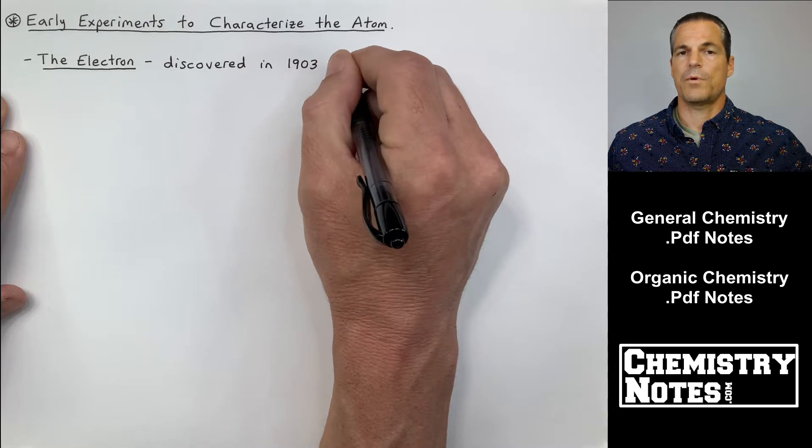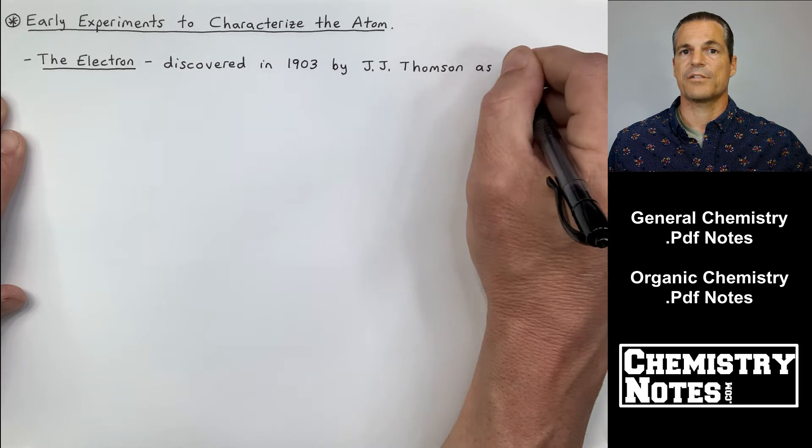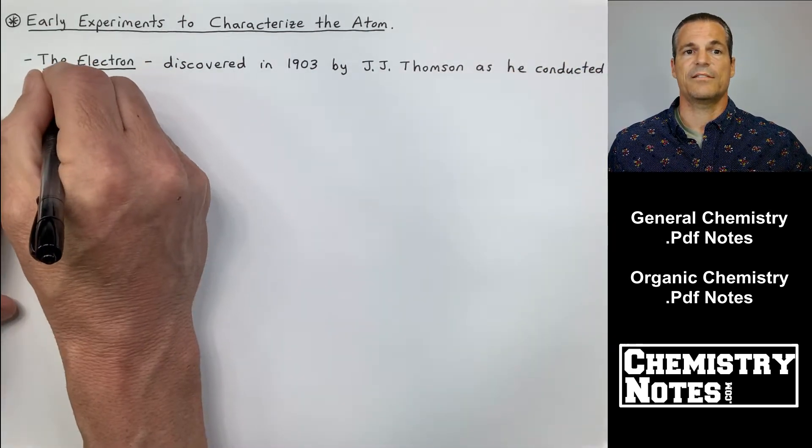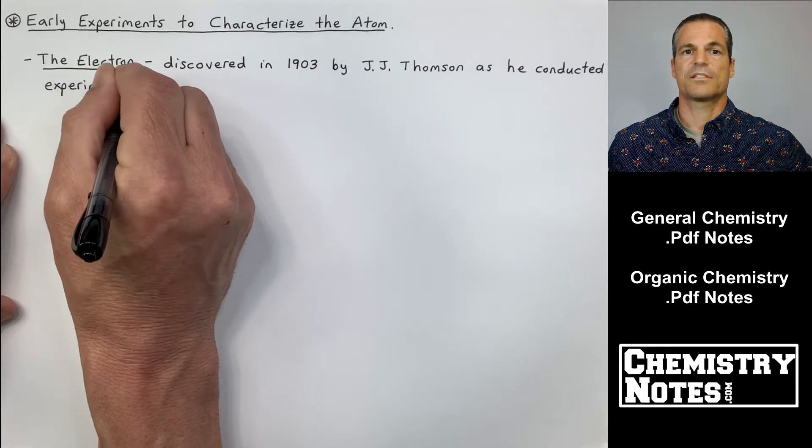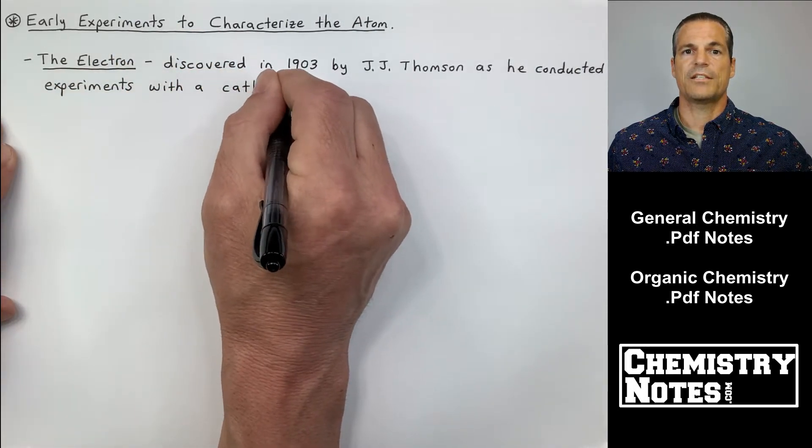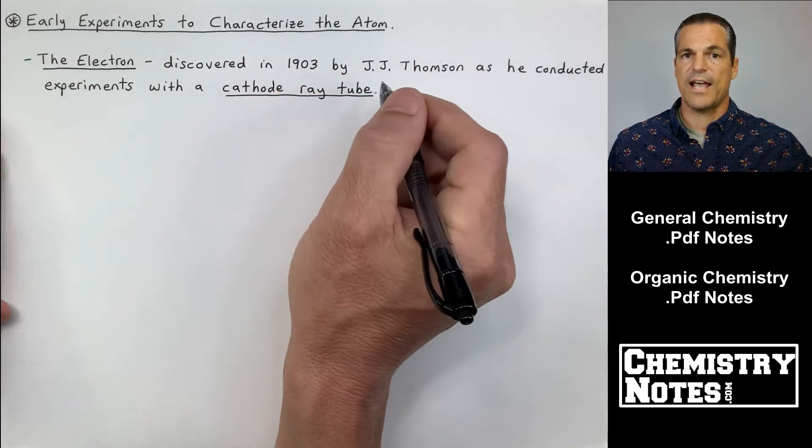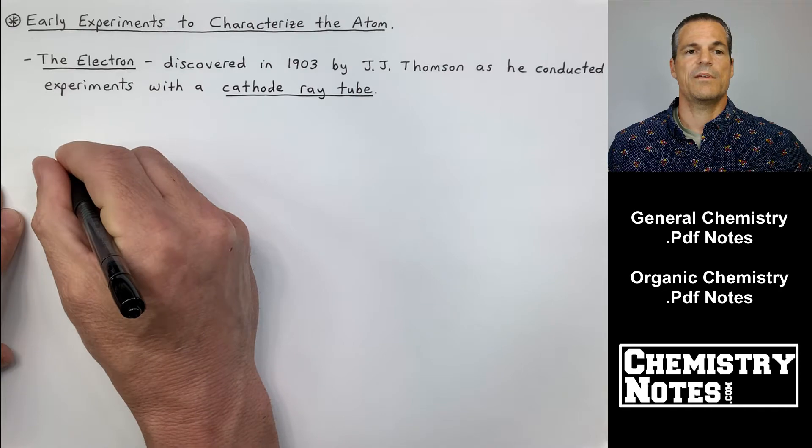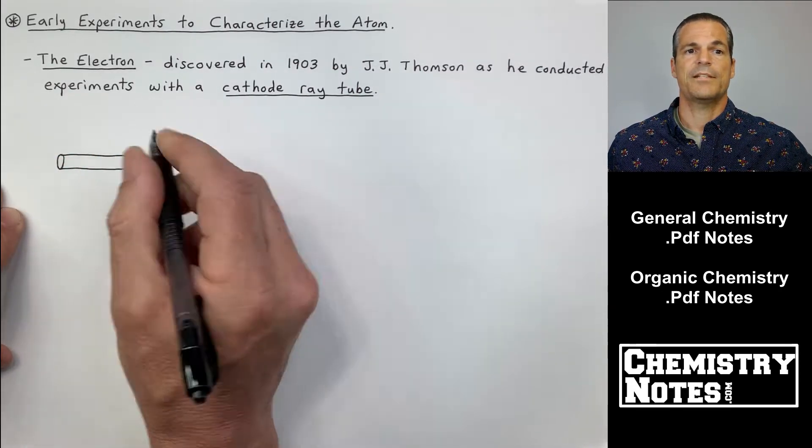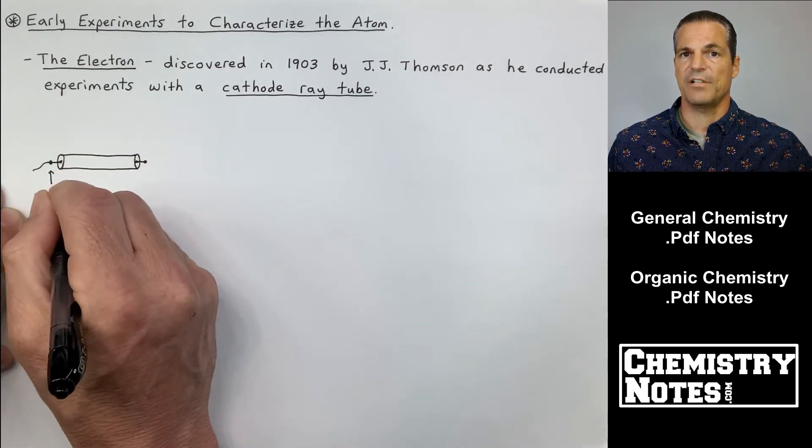The first one we're going to talk about is J.J. Thompson and his discovery of the electron. At the top of page 1 of our notes here, it says the electron was discovered in 1903 by J.J. Thompson as he conducted experiments with a cathode ray tube. I'm going to sketch out a cathode ray tube for you. It's basically just a cylinder and on each end we have an electrode.